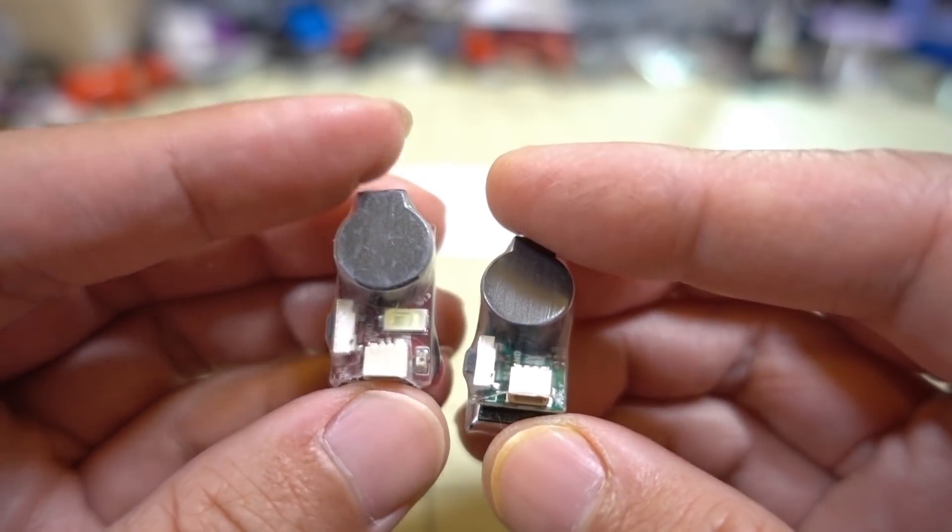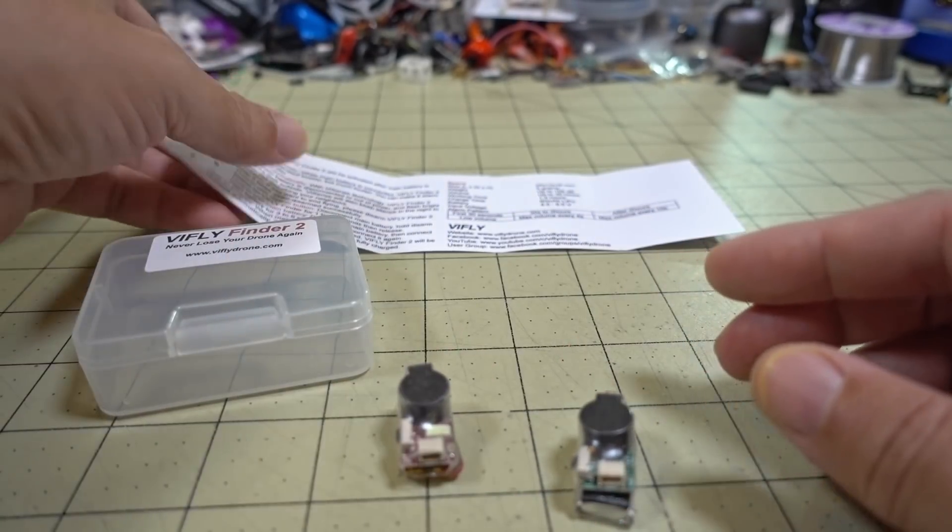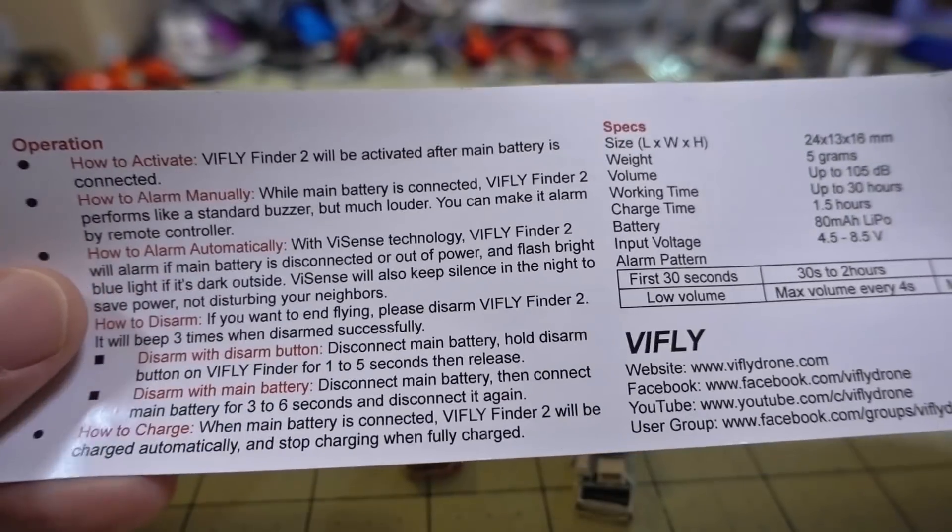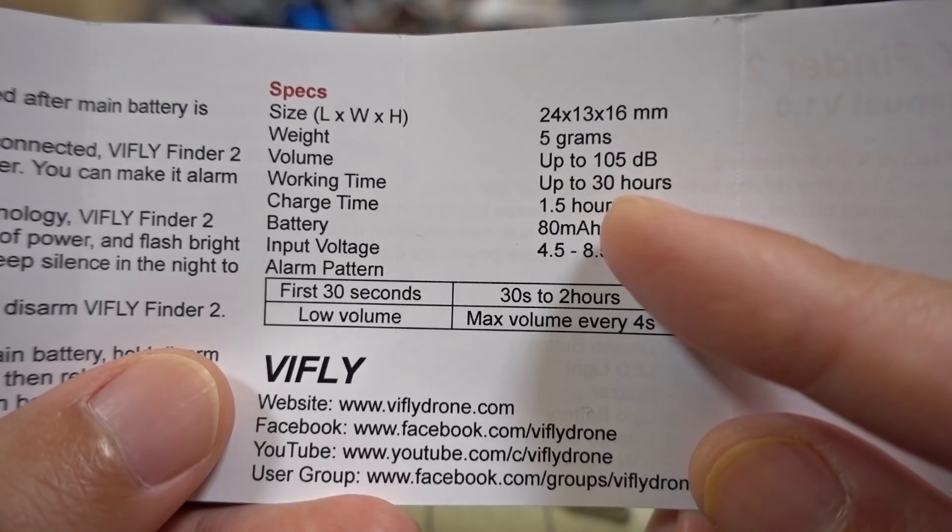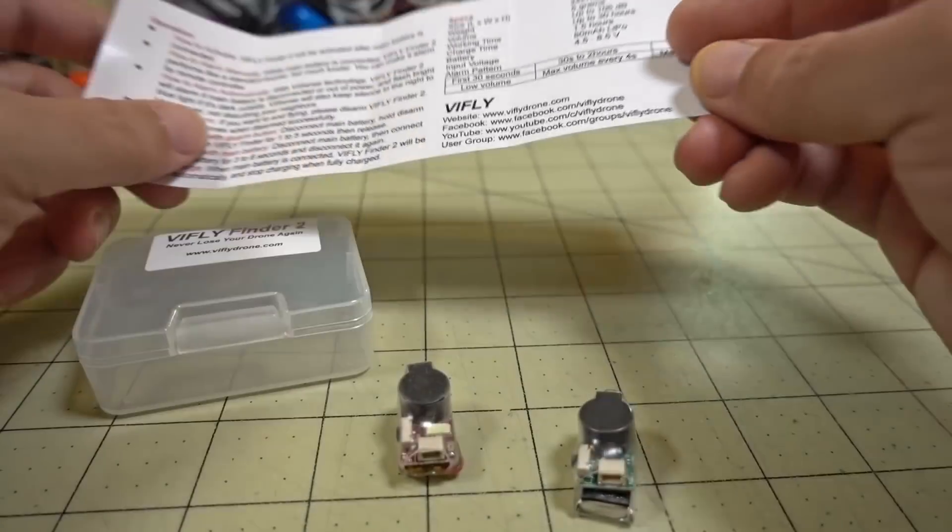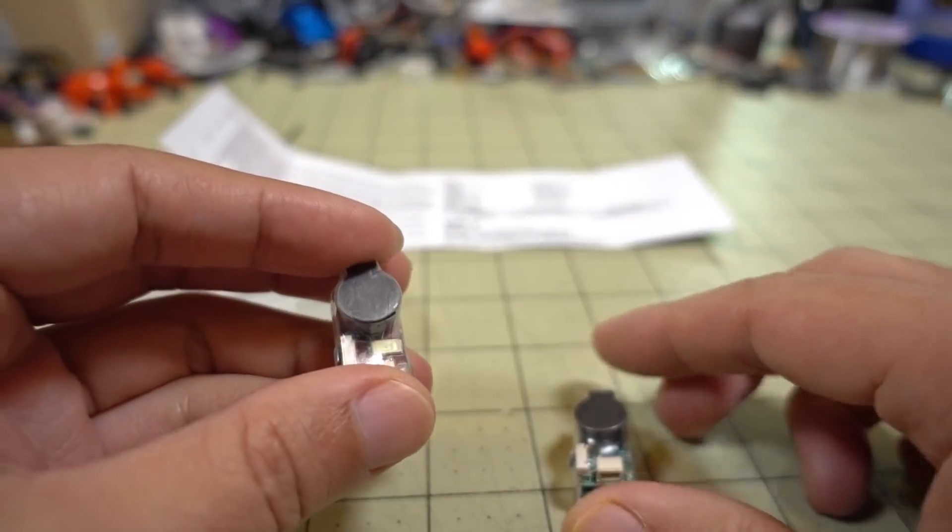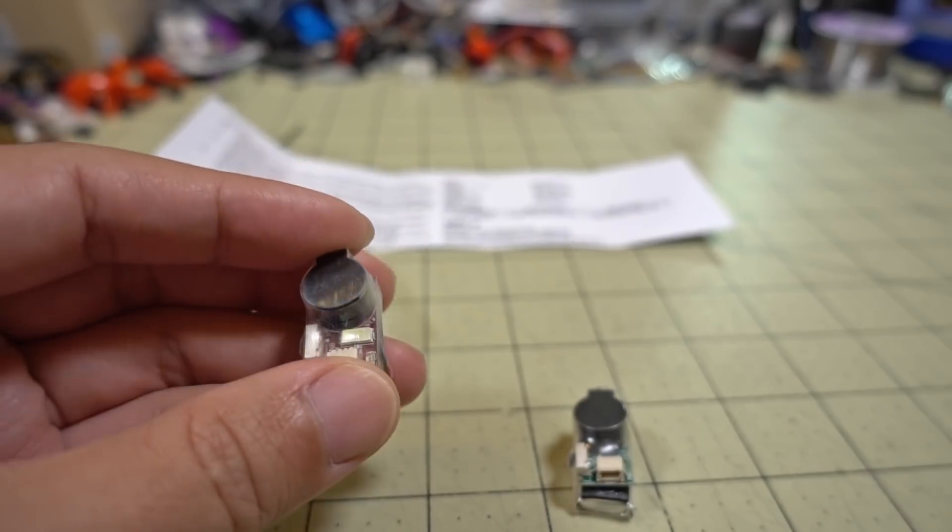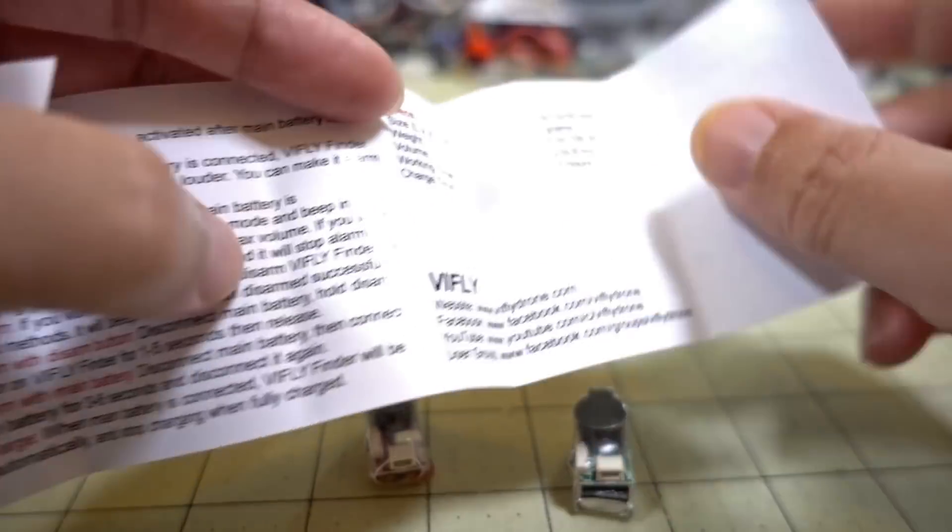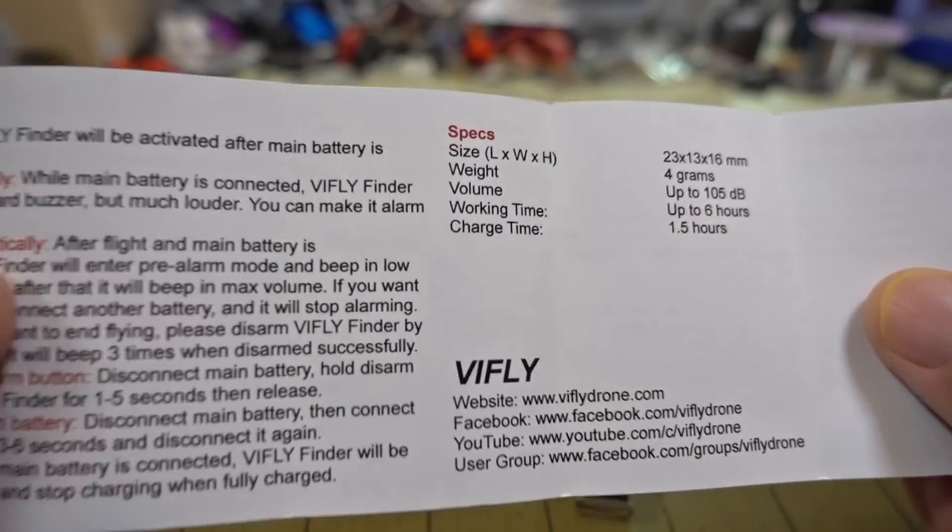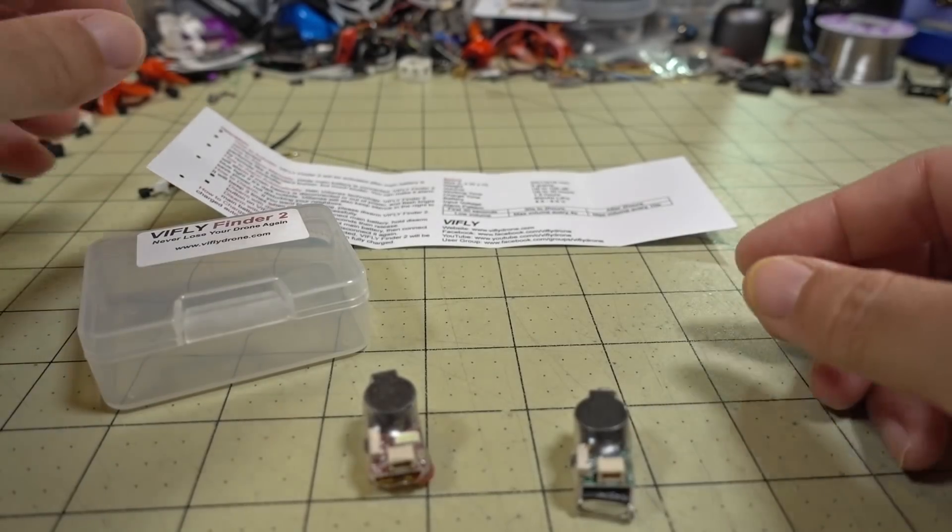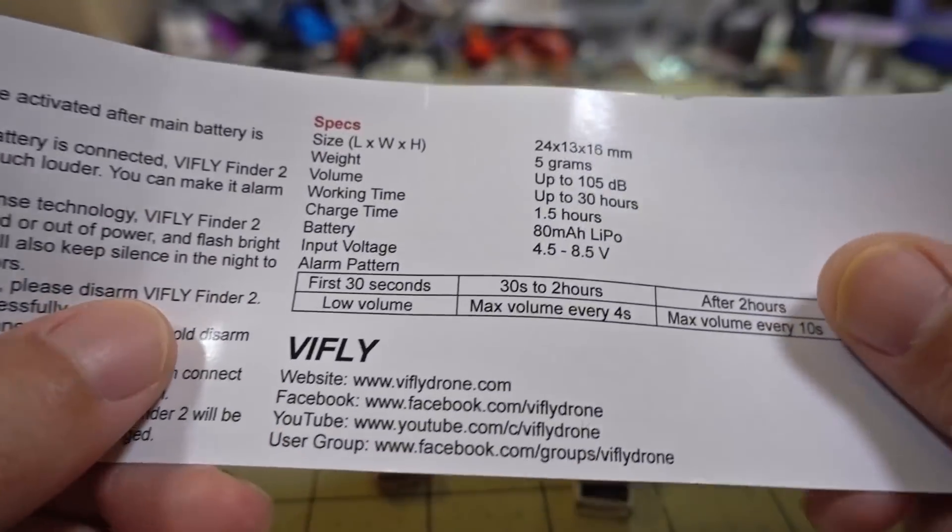One of the big things that they changed was increase the working time. So if you look at the documentation here, it says it will go up to 30 hours. So if you lose your drone up in a tree or something and you can't get it until the next day, it'll still beep up to 30 hours. Whereas version 1, the working time was only up to 6 hours. I think what they did was they changed the firmware and the way that the buzzer worked.